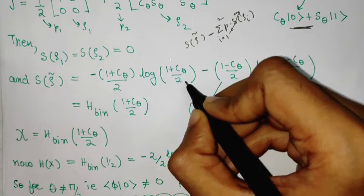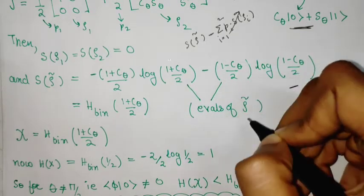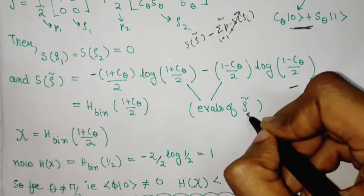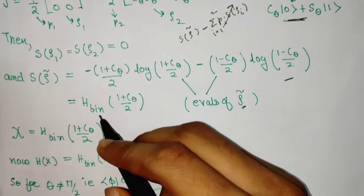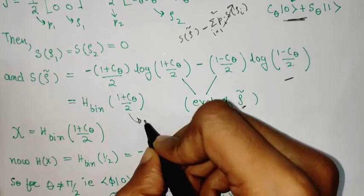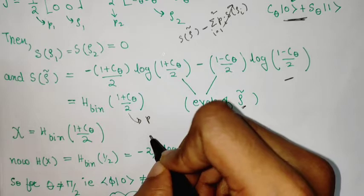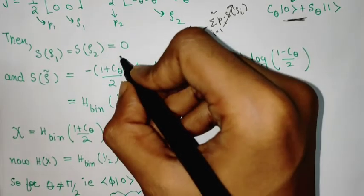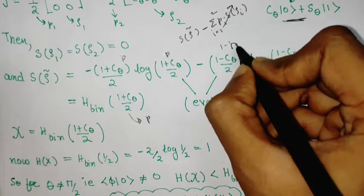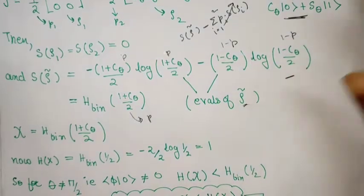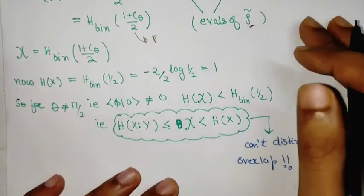The eigenvalues are (1 + cos theta)/2 and (1 - cos theta)/2, so the Holevo chi quantity is just the binary entropy of the probability (1 + cos theta)/2 — that is, -p log p - (1-p) log(1-p).